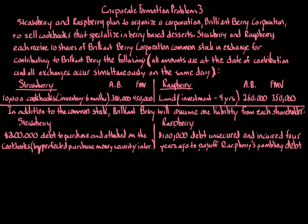Strawberry is giving property worth $450,000 to Brilliant Berry, and Raspberry is giving something worth $350,000. Strawberry has a liability relief of $200,000, and Raspberry has a liability relief of $100,000. If you add up all the fair market values of the assets — $450,000 plus $350,000 — that's $800,000, minus the $200,000 and $100,000 liabilities the corporation takes on. That means the corporation has $500,000 worth of value.